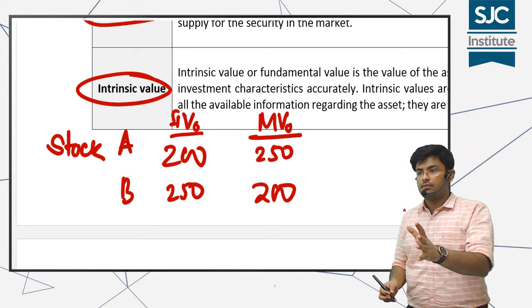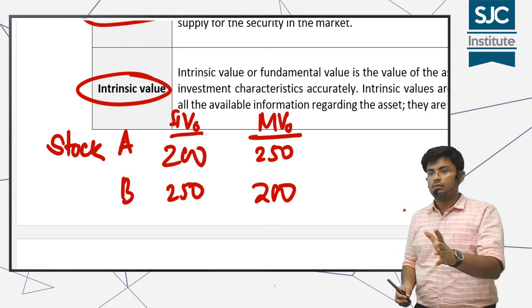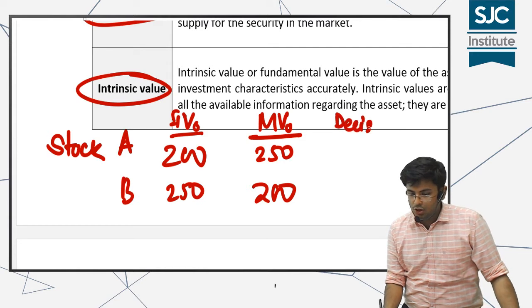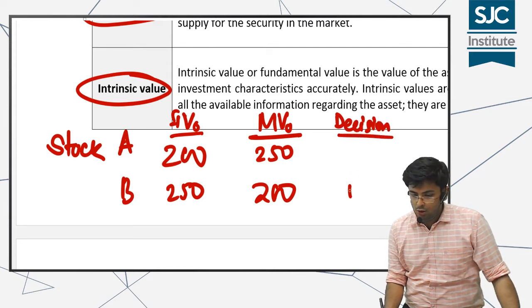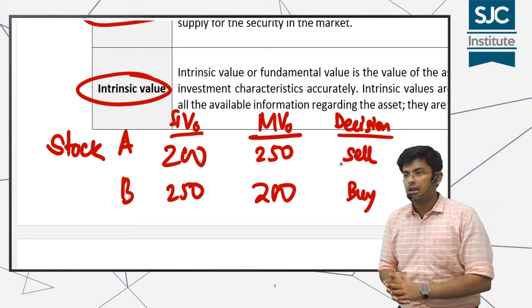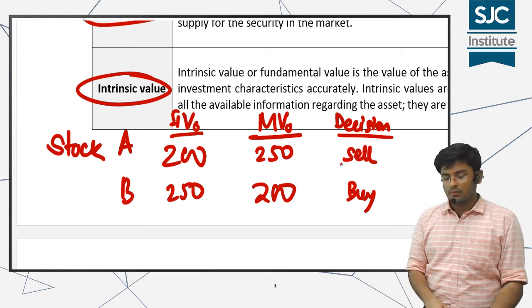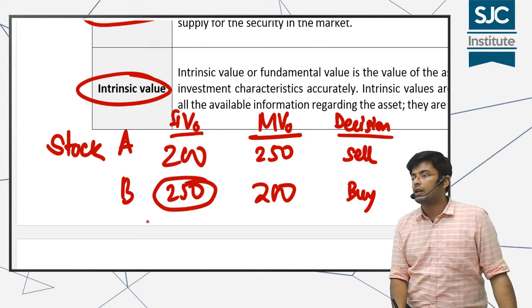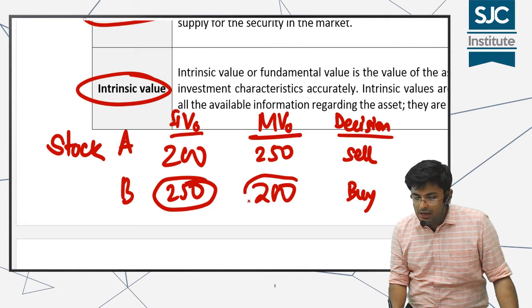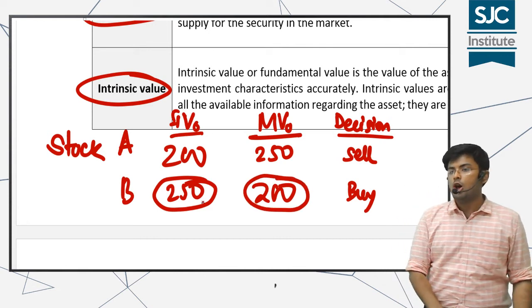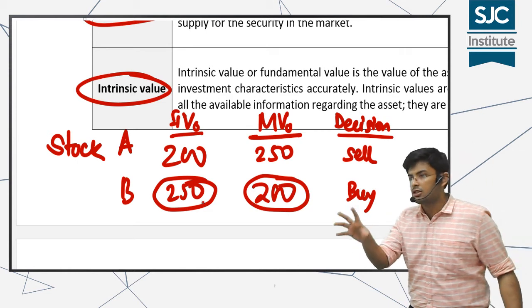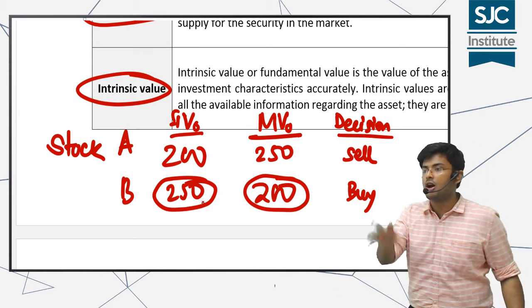A unanimous decision from the class — you would buy Stock B and sell Stock A. Here is the reason: you think that Stock B has a fair value of 250, but it is available in the market at only 200. Don't you feel it is available at a discount? And we love discounts, so we will be buying a stock at a discount.